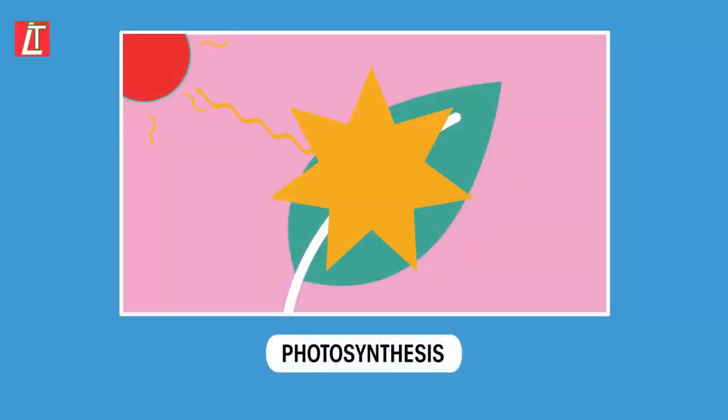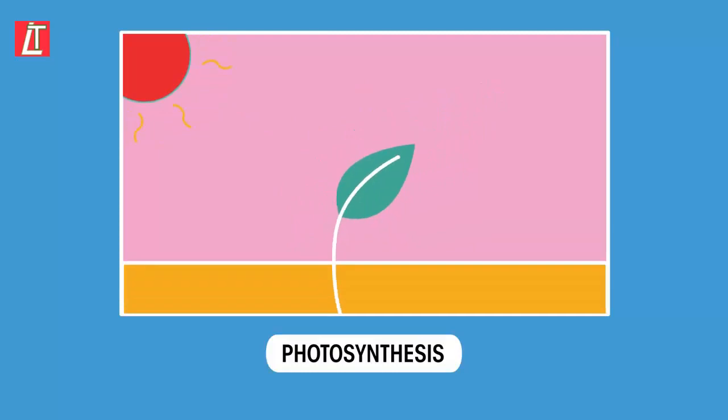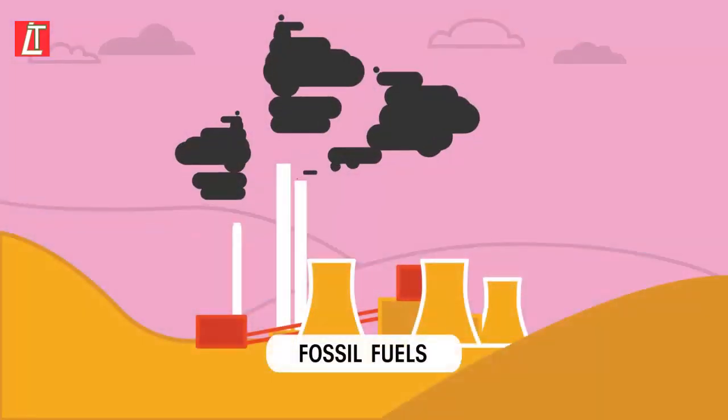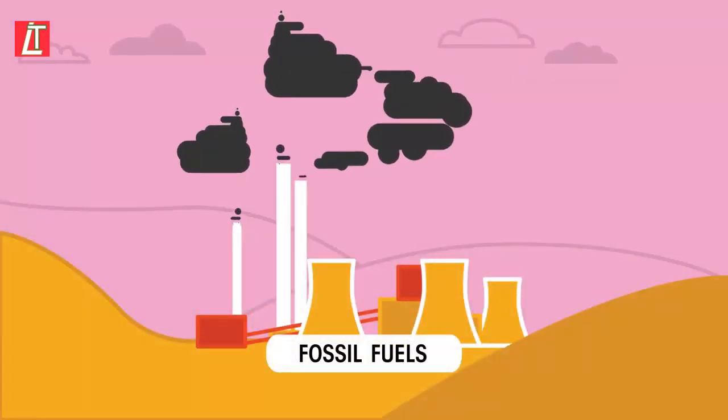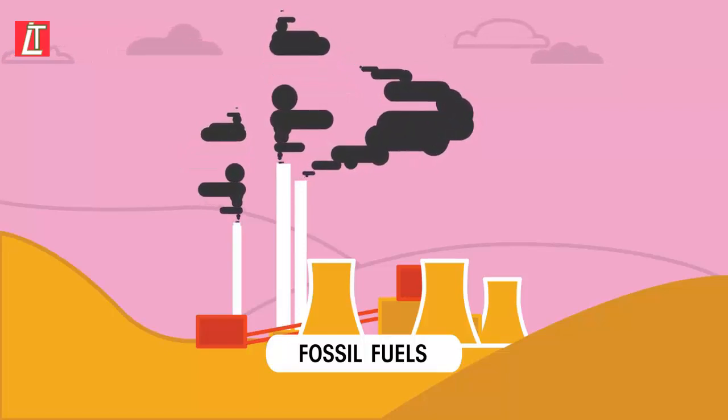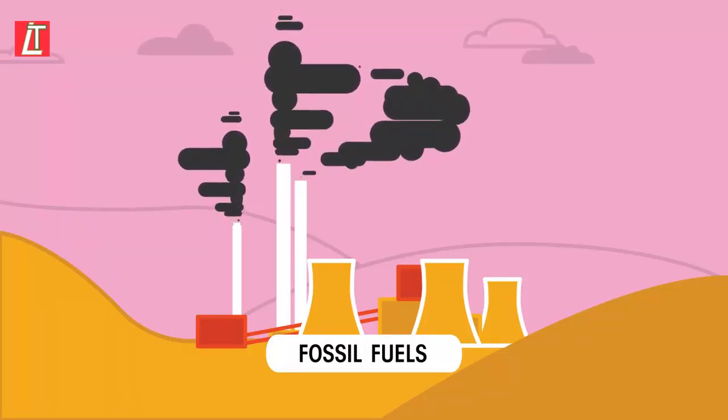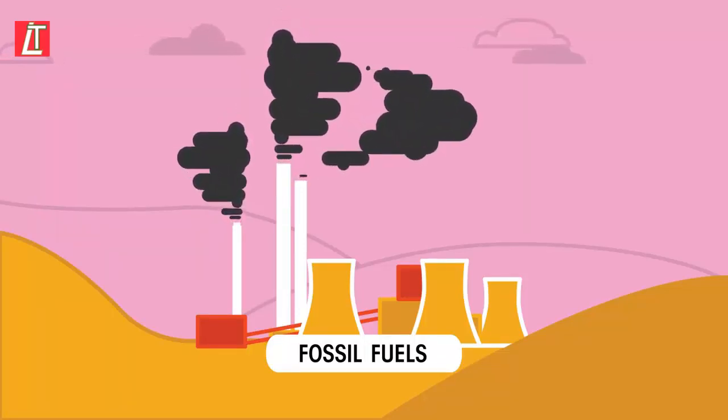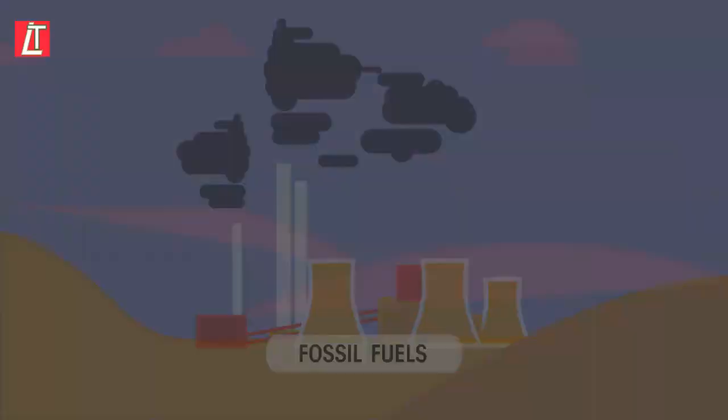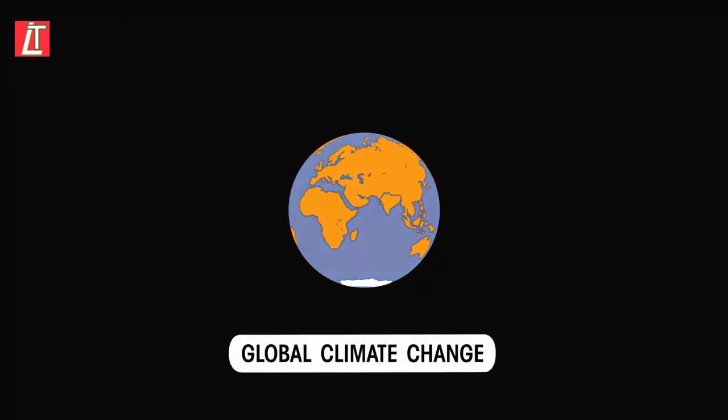Photosynthesis uses energy from sunlight to help plants build up biomass and put oxygen into the atmosphere. Our fossil fuels are ancient biomass which rejoin with the oxygen when we burn them, putting the greenhouse gas carbon dioxide into the atmosphere, which in turn has led to global climate change.